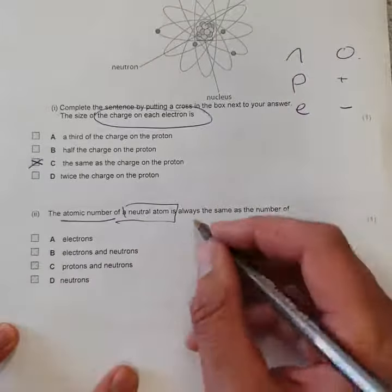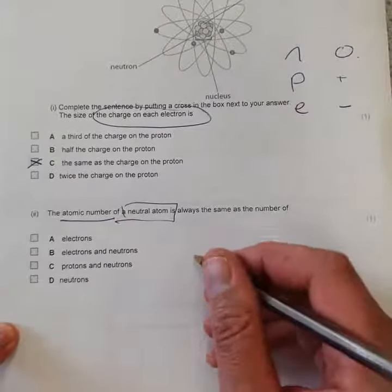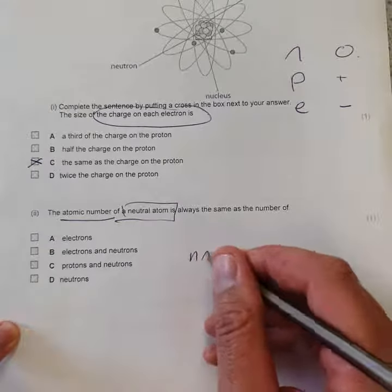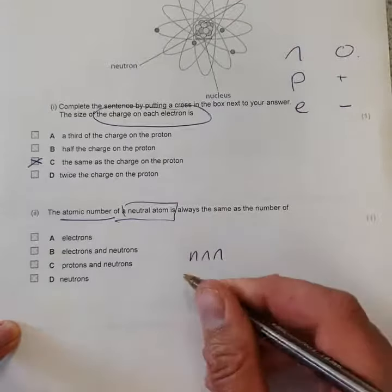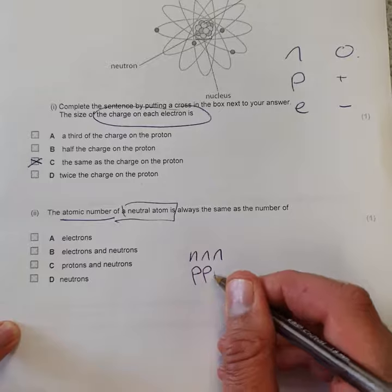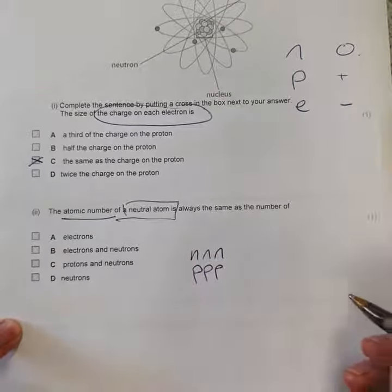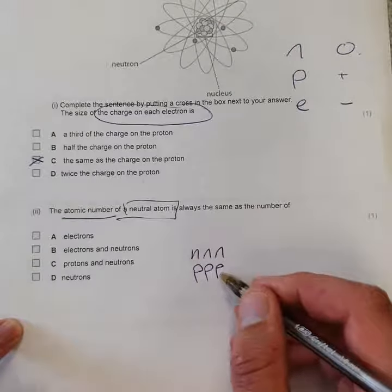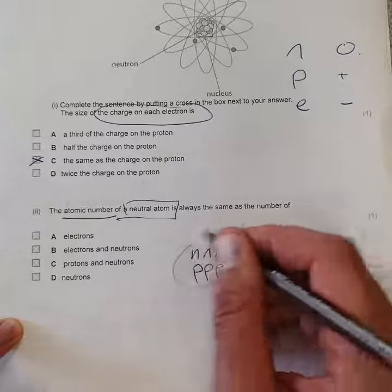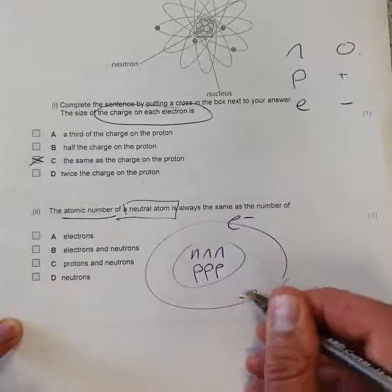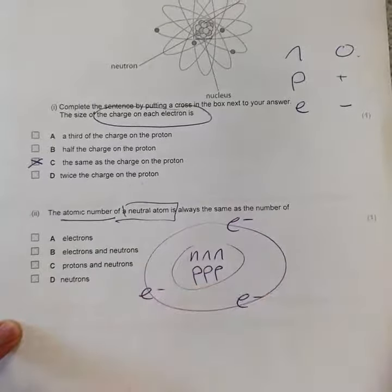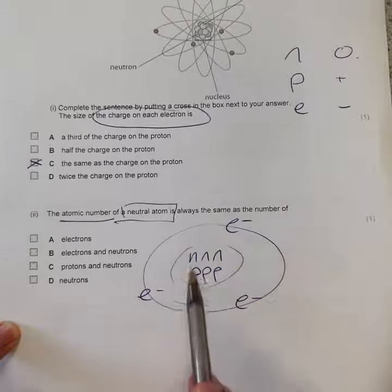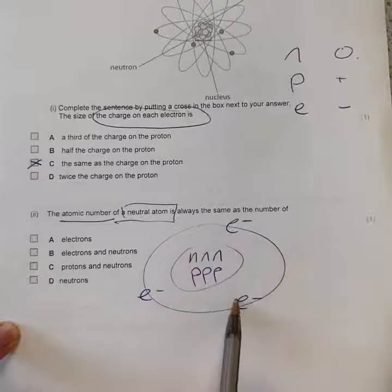A neutral atom. So let's say we have one, two, three protons, one, two, three neutrons and three protons in our nucleus. And around the outside we're going to have one, two, three electrons. So this is a neutral atom because the protons and neutrons are equal.